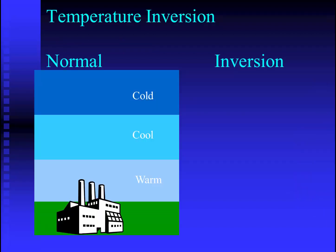Let's take a look at this with a little more detail. Under normal circumstances, we'll find warmer air down near the surface of the Earth, gradually getting cooler the higher up you go. If a factory is producing smoke, that smoke will rise in the progressively cooler air and will eventually disperse at higher altitudes.